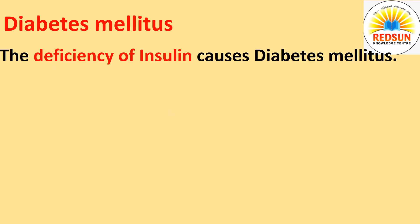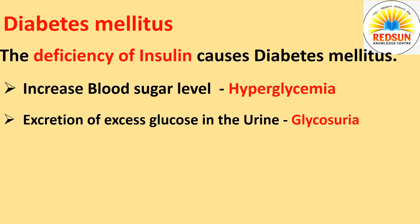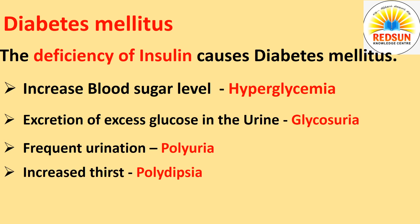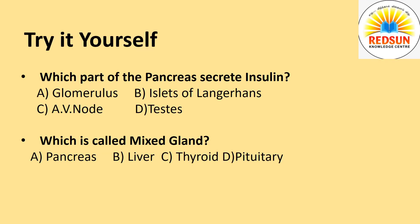Diabetes mellitus. The deficiency of insulin causes diabetes mellitus. It is characterized by increased blood sugar level — hyperglycemia, excretion of excess glucose in the urine — glycosuria, frequent urination — polyuria, increased thirst — polydipsia, and increased appetite — polyphagia.